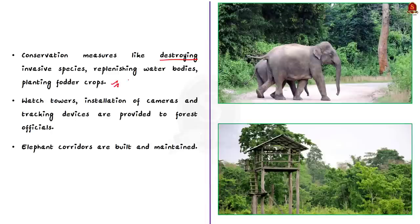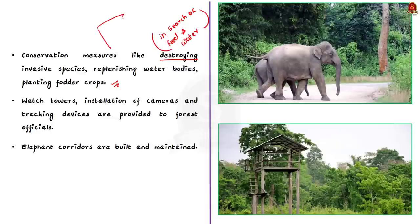Why do elephants come into human settlements? They come into human settlements because there is a lack of food and water inside the elephant reserves. So by using this conservation method, food and water is provided for the elephant within the elephant reserve itself, and elephants entering into human settlements can be prevented.